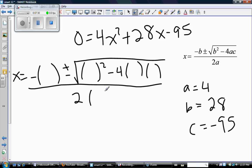x equals negative b plus or minus the square root of b squared minus 4ac all over 2a. So that to me is the first step of using quadratic equation. And now I can actually figure out what my substitutions are. So negative b and b squared. So b is 28. So minus 4ac. And this is over 2a.